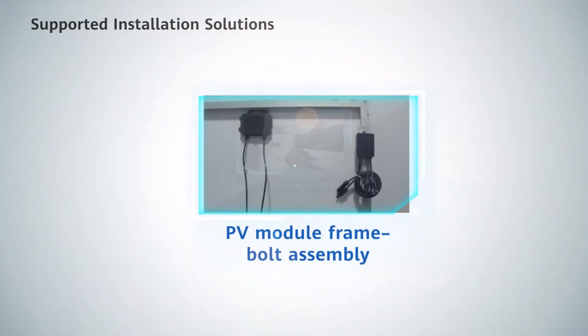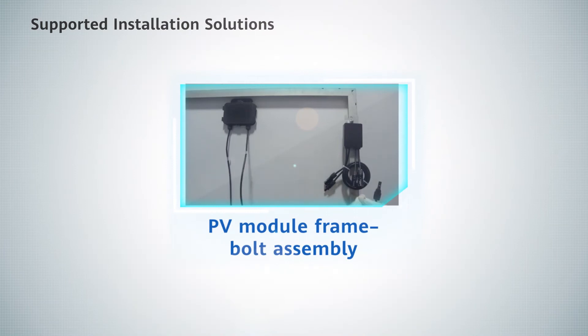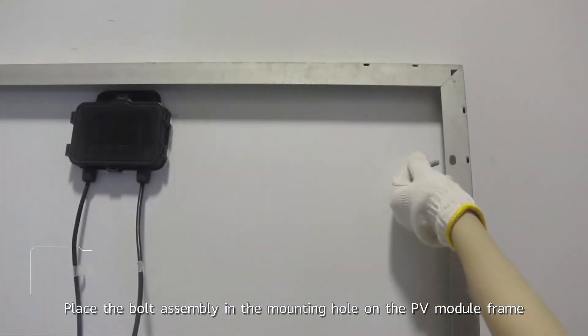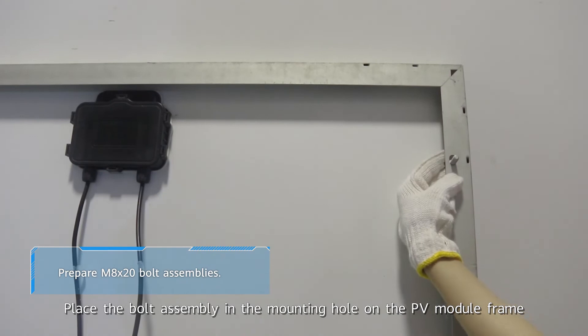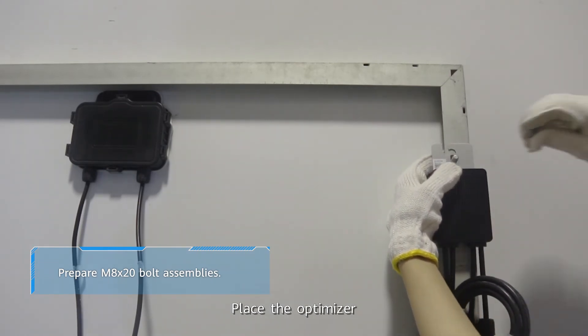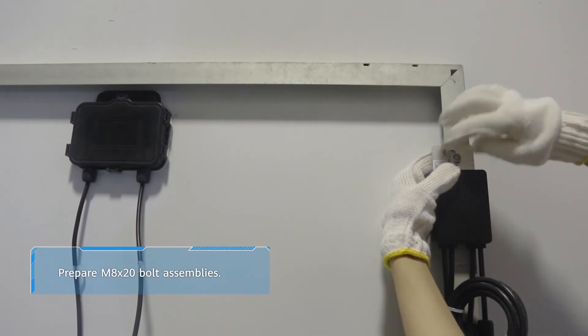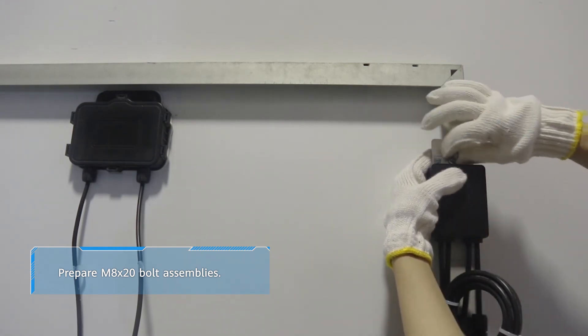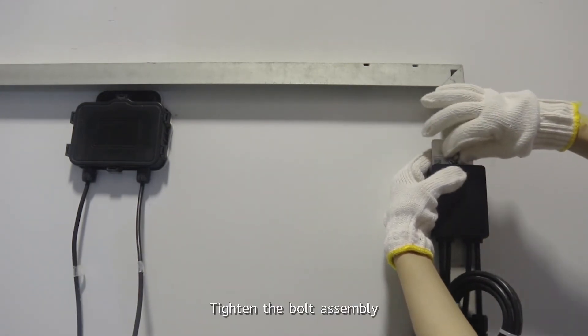PV module frame bolt assembly. Place the bolt assembly in the mounting hole on the PV module frame. Place the optimizer. Tighten the bolt assembly.